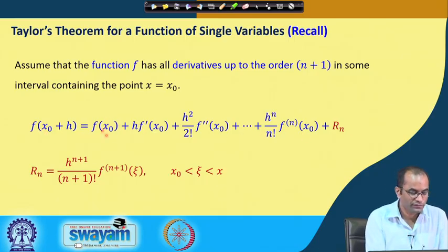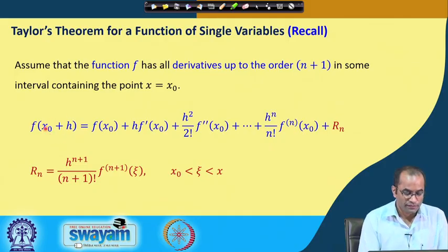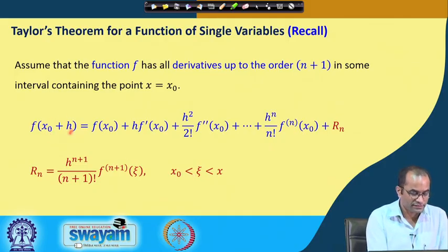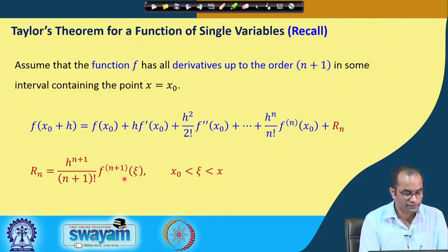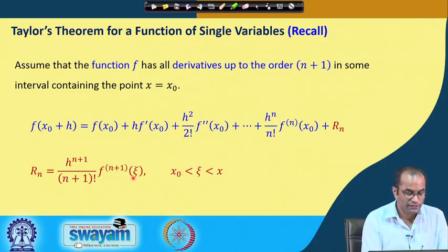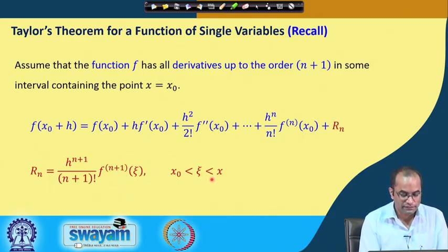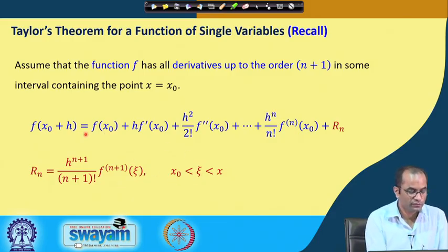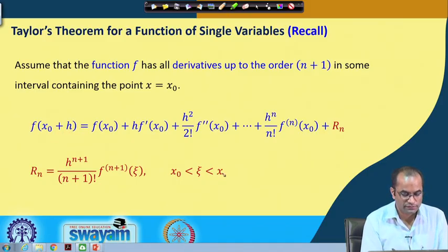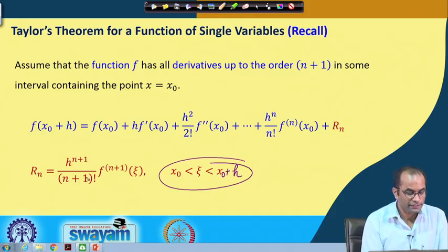The point ξ lies between x₀, where we expanded the function, and the point x₀+h. This point ξ where the (n+1)th derivative is evaluated is not known precisely, but it exists somewhere between x₀ and x₀+h, which we can also write as x₀+θh.